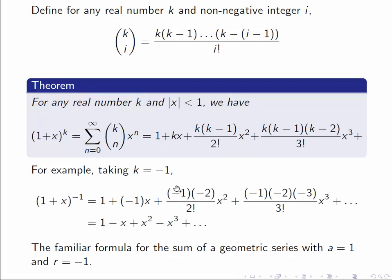For example, if we take k to be equal to -1, (1+x)^(-1), we just take this formula and put in -1 everywhere the k is. So we get -1 times x and then (-1)(-2)/2! times x^2, (-1)(-2)(-3) times x^3 over 3!, etc.